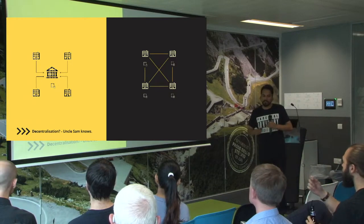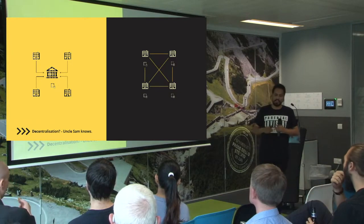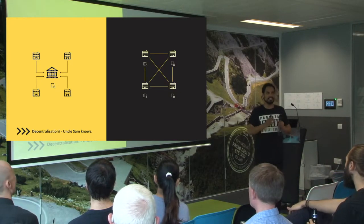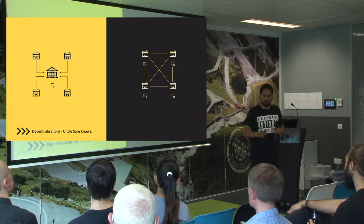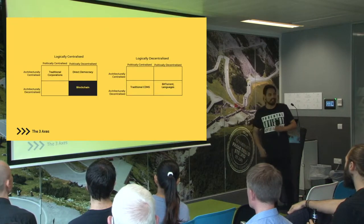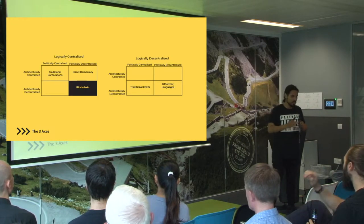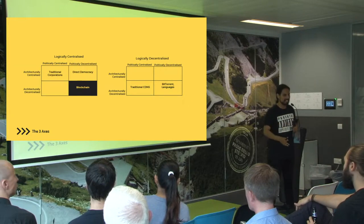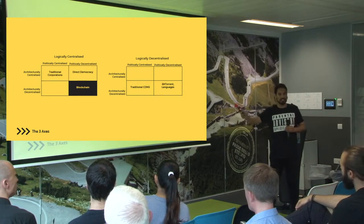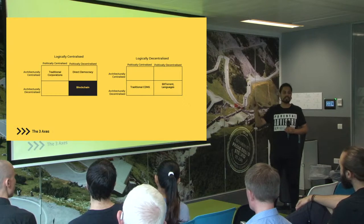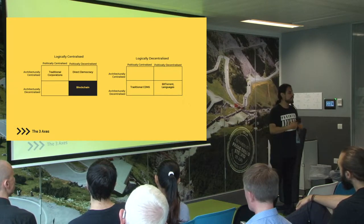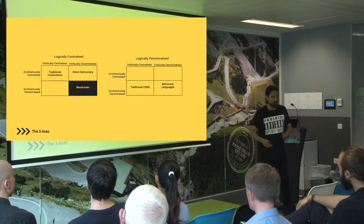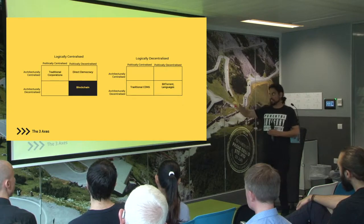There's one thing we always miss when it comes to decentralization — it's not a single-faceted problem. You can divide decentralization into three different axes. We call them political decentralization, logical decentralization, and architectural decentralization. Big words — hence the charts.